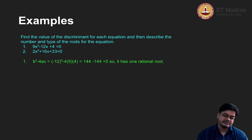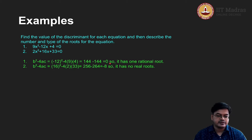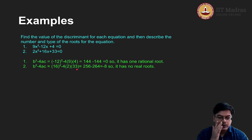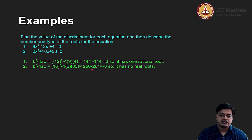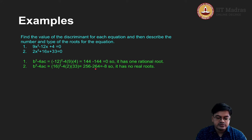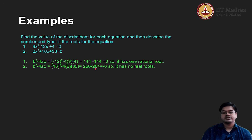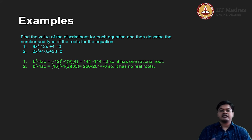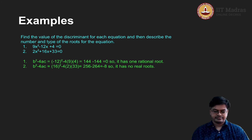For the second example: 2x squared plus 16x plus 33 equals 0, where b is 16, a is 2, and c is 33. Evaluating b squared minus 4ac: 16 squared is 256, and 4 times 2 times 33 is 264. So 256 minus 264 gives minus 8. Therefore b squared minus 4ac is less than 0, and hence it has no real roots.